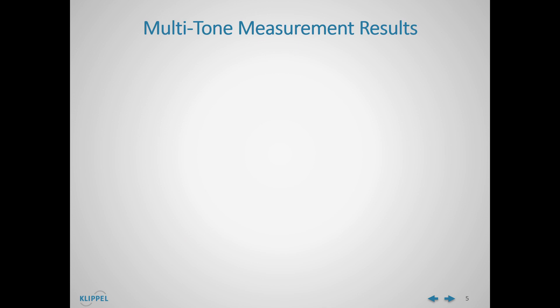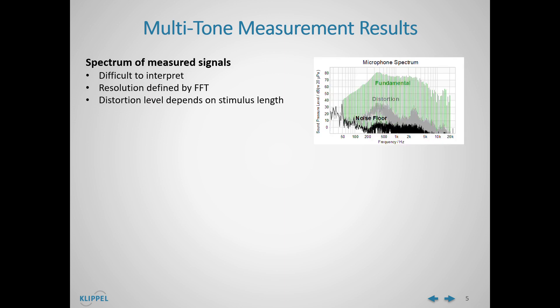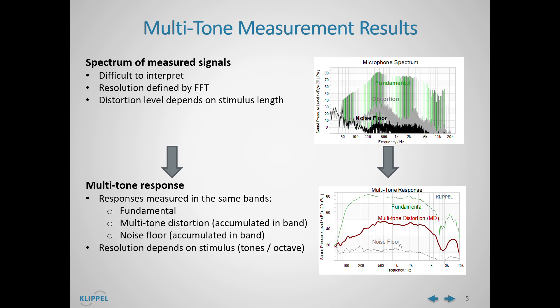Regarding the multi-tone measurement results, it's important to understand why we need to perform this post-processing. Why cannot the spectrum of the measured signals be processed directly? The spectrum of measured signals is difficult to interpret, since the resolution of the distortion is defined by the length of the fast Fourier transform. Therefore, the distortion level depends on the stimulus length. On the contrary, the multi-tone responses are measured in the same bands, which is the measurement interpretation. Fundamental, multi-tone distortion, and noise floor share the same number of points, since multi-tone distortion and noise floor accumulate the energy in the same bands as the fundamental.